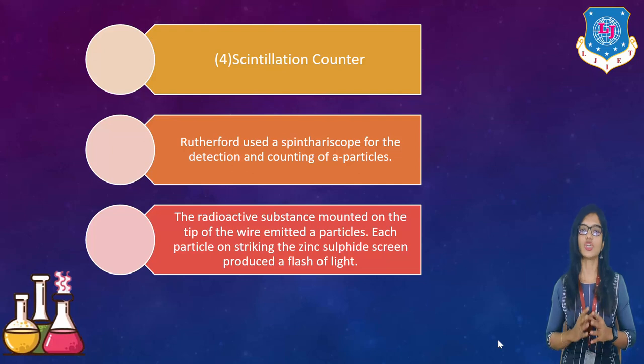Our next one is scintillation counter. Scintillation counter is a counter we can use to actually quantify the radiation. So Rutherford used a spin stereoscope for detection and counting of alpha particles. And the radioactive substances mounted on the tip of wire emitted alpha particles. So each particle on striking the zinc sulphide screen produced a flash of light. So that flash of light gives you the counting of radiation.